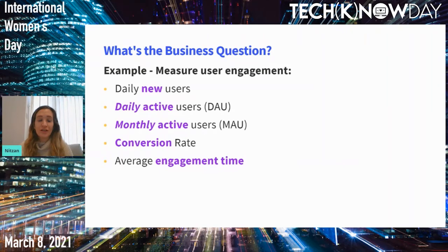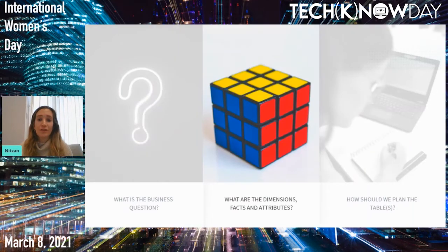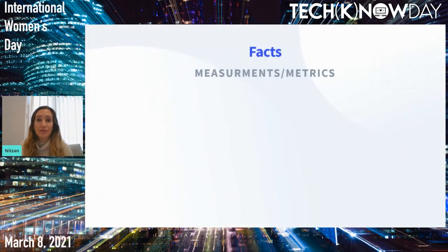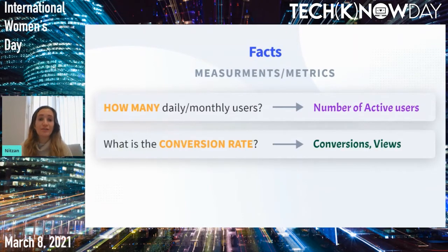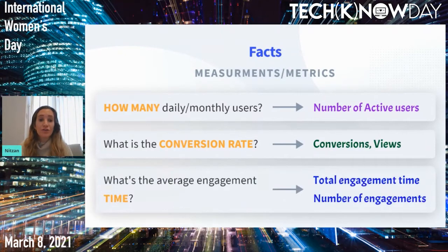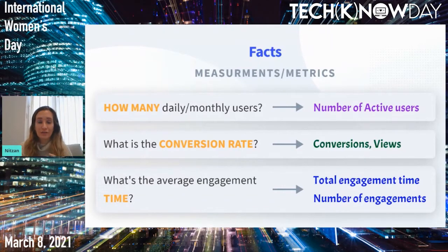After we've identified the business question, the next thing we're going to do is understand what are the dimensions, facts, and attributes. Let's start with facts. Facts are the measurements or the metrics — basically the numeric values that we're measuring. To answer how many daily or monthly active users, we'll need to save the fact number of active users. To answer what the conversion rate is, we'll need to save the conversions and the views. To answer what the average engagement time is, we'll need to save two facts: total engagement time and number of engagements. For ratio-based questions, it's important to measure the numerator and the denominator rather than the ratio itself, because we want to be able to aggregate at different levels.